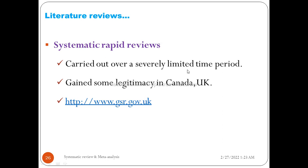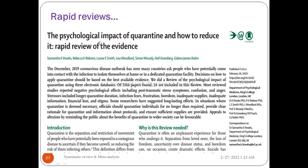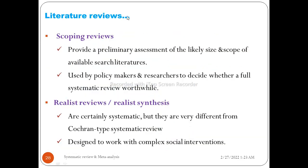A systematic rapid review is written quickly with a limited time period; speed is required. An example is 'Psychological impact of quarantine and how to reduce it: a rapid review of evidence.' The fourth type is the scoping review, which provides a preliminary estimate of the likely size and scope of available literature. It is used by policymakers and researchers to decide whether a full systematic review is worthwhile. Scoping review is the most common written review.